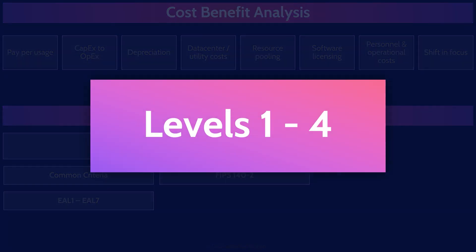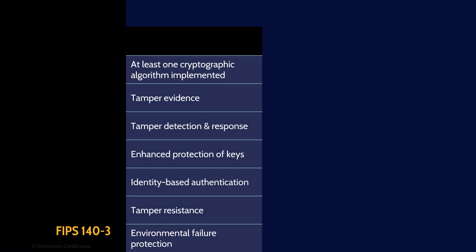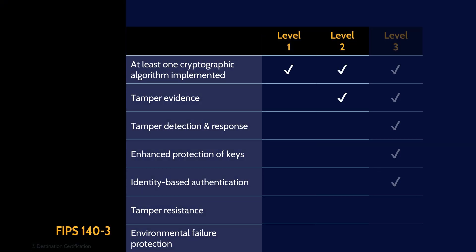FIPS defines four levels. Level 1 is the lowest and imposes limited requirements — components must only be production-ready. Level 2 adds requirements for physical tamper evidence and role-based authentication. Level 3 adds tamper resistance and identity-based authentication. Finally, Level 4 adds robustness against environmental attacks. Here's a table that nicely summarizes the four FIPS levels.